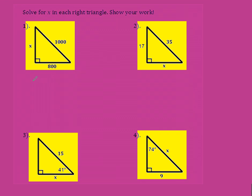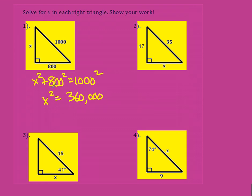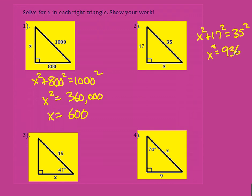In both of these we're looking for one of the legs. So x squared plus my other leg squared equals my hypotenuse squared. When I simplify this, I should end up getting x squared equal to 360,000 — I had a million here, this was 640,000. Take the square root of both sides and I get x equals 600. Same thing here: x squared for the leg plus 17 squared for the other leg equals 35 squared. I should get x squared equals 936. I can't take that square root cleanly, so x equals the square root of 936. That's actually more precise than a decimal.